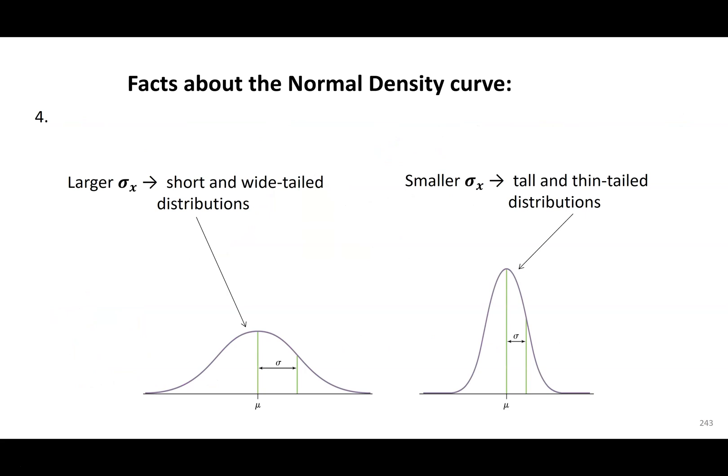So some facts here. The bigger your standard deviation is, the more spread out your data is. So the bigger sigma is, the wider it gets. The smaller your sigma or standard deviation is, the thinner it gets. So it gets more narrow.